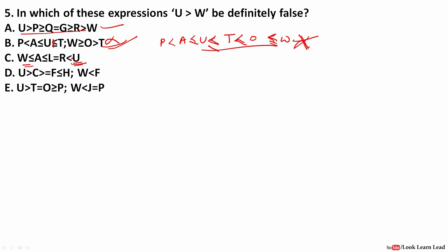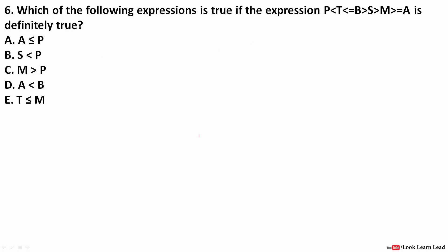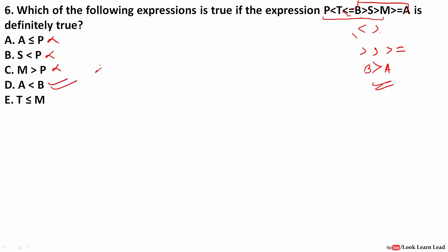Next: which expression is true if the given expression is definitely true? Checking A ≤ P — two same-facing signs between A and B make it false. P > S — the sign inside P is less-than, so false. P < M — signs are facing the same way, so false. A < B — the priority goes to the dominant sign and A < B is true. So the answer is D.